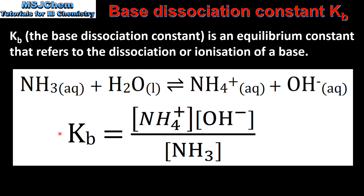Here we have the expression for the base dissociation constant for the above reaction. In the numerator we have the concentration of the ammonium ion, which is the conjugate acid of ammonia, and the concentration of the hydroxide ions. In the denominator we have the concentration of ammonia.